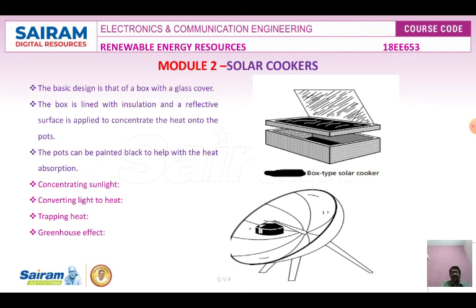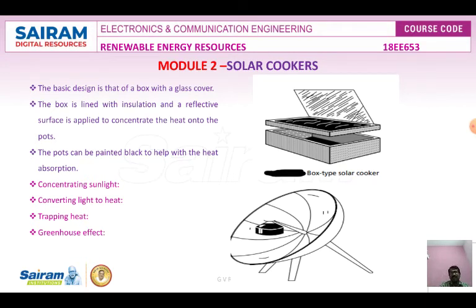People use solar cookers primarily to cook food and pasteurize water. Numerous factors must be considered: access to materials, availability of traditional cooking fuels, climate, food preference, cultural factors, and technical capabilities. Any simple solar cooker uses certain core principles for the solar water heating system.